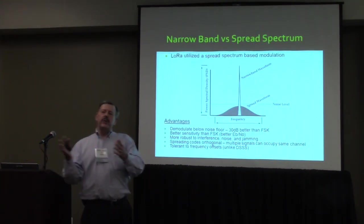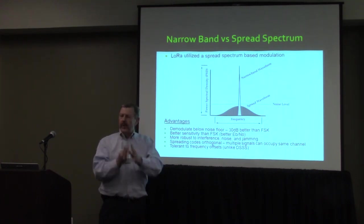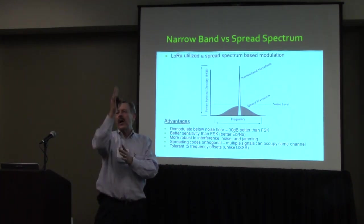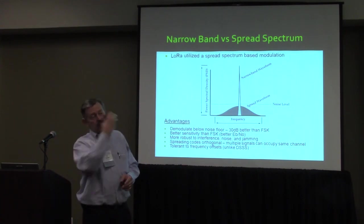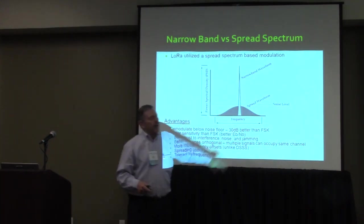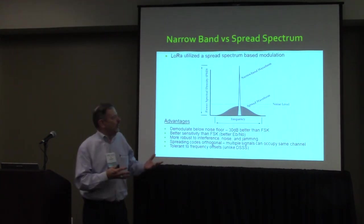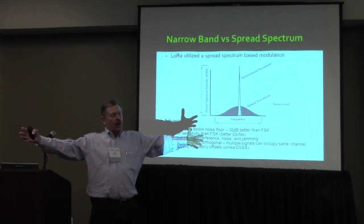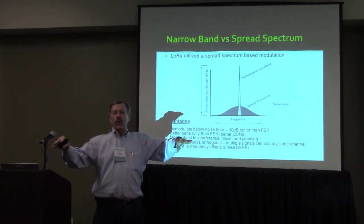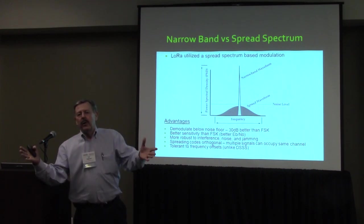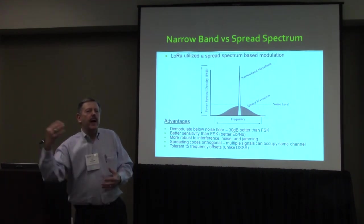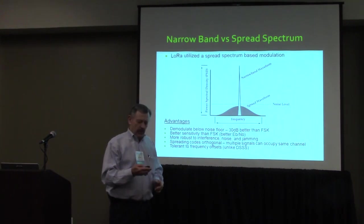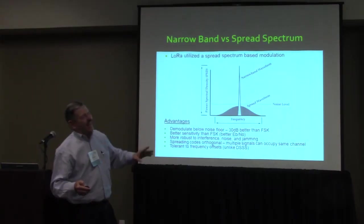There are two approaches to LP-WAN radio: ultra-narrowband and spread spectrum. Ultra-narrowband puts all energy into a narrow part of the spectrum and transmits with the highest possible power. Spread spectrum — used by companies like Ingenu and LoRa — spreads the signal out over a larger area of the spectrum, actually below the noise floor. It's like whispering in a crowd: you know the characteristics of the person you're listening to and can pick their voice out over the noise. Two approaches: ultra-narrowband and spread spectrum.